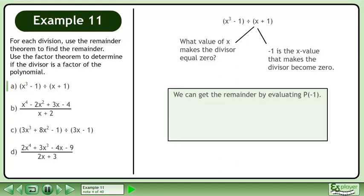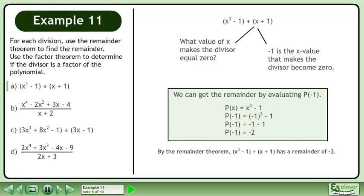We can get the remainder by evaluating p at negative 1. Evaluating p at negative 1 gives a result of negative 2. By the remainder theorem, x cubed minus 1 divided by x plus 1 has a remainder of negative 2.